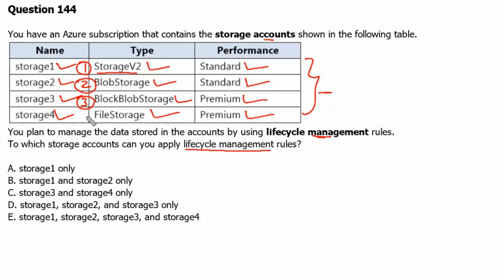Back to the question. In the file storage account, we cannot apply any lifecycle management rules. Therefore, option D is the correct answer, meaning lifecycle management rules apply to Storage1, Storage2, and Storage3, but not Storage4.